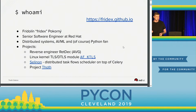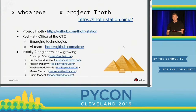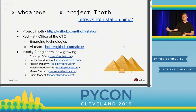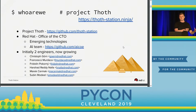Project Thoth is, as of now, developed by six engineers in total. Initially we started with two engineers. The project is inside a bigger team called AI COE, which stands for Artificial Intelligence Center of Excellence. This team is part of the office of the Red Hat CTO, and our focus is on emerging technologies and coming up with solutions for them. You can find Project Thoth on GitHub under the Thoth Station organization, and we also have a website at thothstation.ninja.